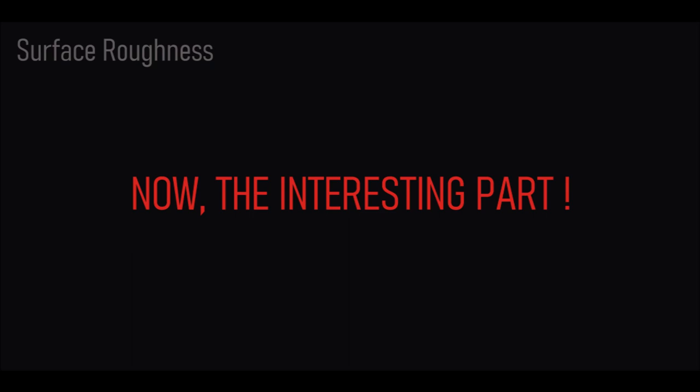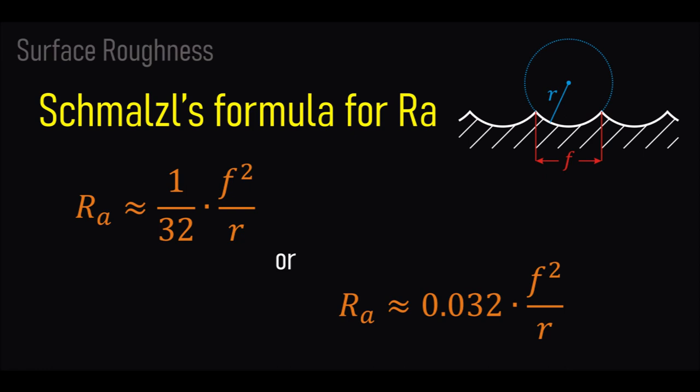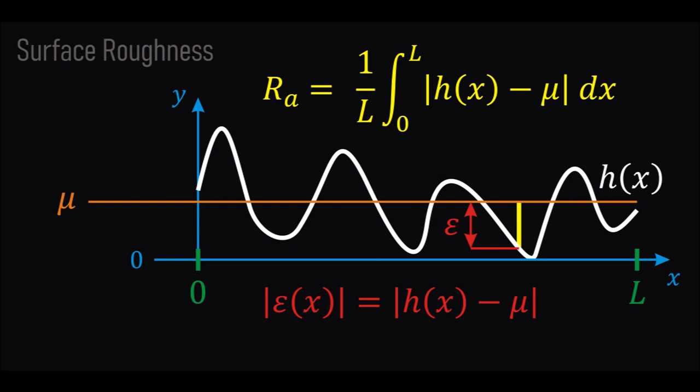So we're done with the maximum roughness parameter R_t. Now let's move on to the more interesting and more complicated part because, for what follows, I couldn't find any proof anywhere or any calculations at all. This is the real heart of the video. We want to find out a formula for the average roughness parameter R_A and find out where the second Schmalz formula comes from.